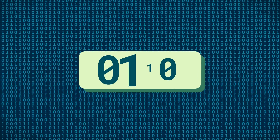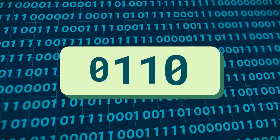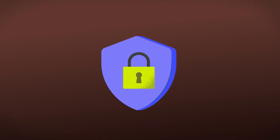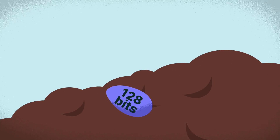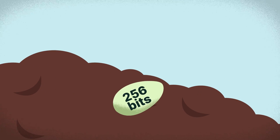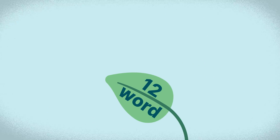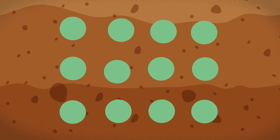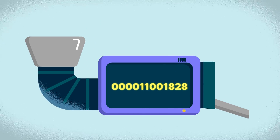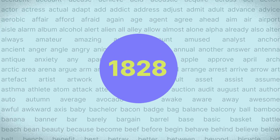This seed phrase creation process begins with the creation of a random binary number of zeros and ones, known as the entropy. Depending on the desired security level, the entropy could be a minimum of 128 bits to generate a 12-word seed phrase, or a maximum of 256 bits to create a 24-word seed phrase. These bits are then divided into 12 to 24 groups and converted into decimal format, with each group of bits corresponding to an index value representing a specific word from the BIP39 word list.